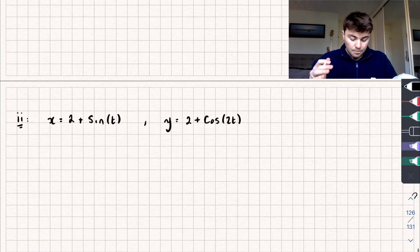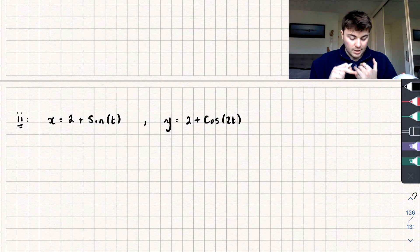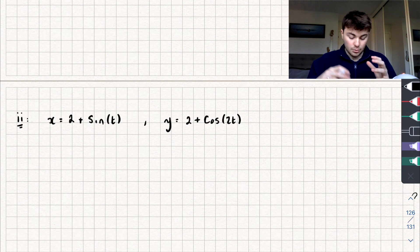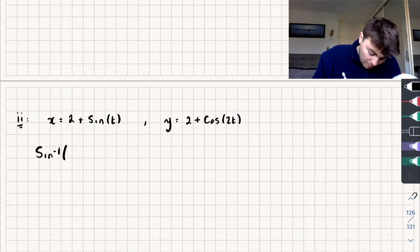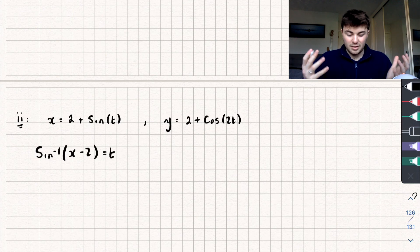The second one is slightly trickier. And this is where we have trig functions in our equations. So we've got x equals 2 plus sine of t, and y is equal to 2 plus cosine 2t. And so we could rearrange to make t the subject, say for the first equation, x equals 2 plus sine of t. But we would get that the inverse sine of x subtract 2 is equal to t. And substituting that in doesn't really make a nice equation that we want to deal with.